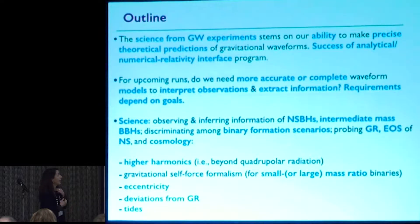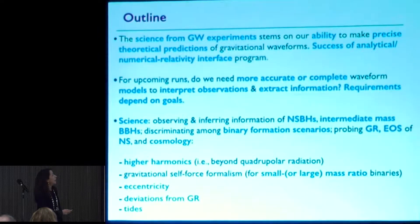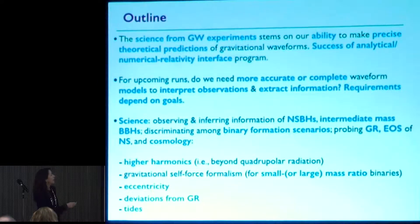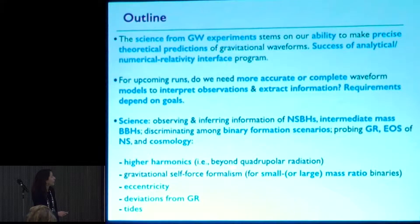We would like to observe and infer information from neutron star-black holes — we have not seen them yet. What about intermediate mass black holes with quite large mass? We would like to discriminate among binary formation scenarios, probing general relativity, equation of state, cosmology, etc. To do this kind of science, I will focus on aspects still missing in our waveform models: inclusion of higher harmonics, more accurate waveforms in the small mass ratio limit, eccentricity, deviation from GR, and tides.